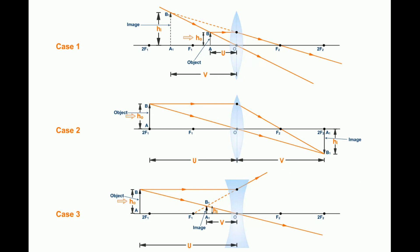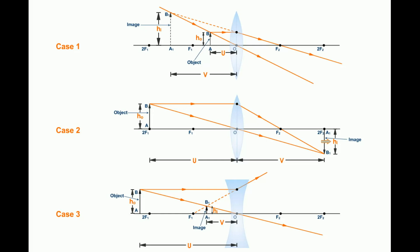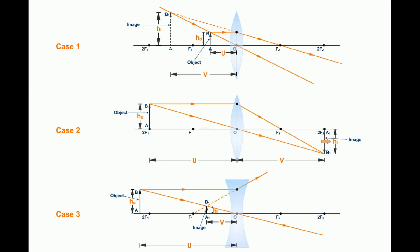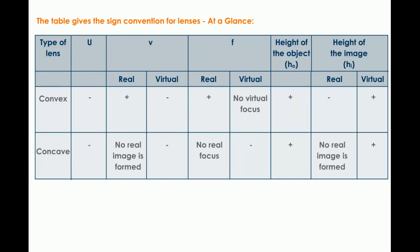Now, in cases 1 and 3, the image is also formed above the principal axis, so the height of the image is positive. And in case 2, the height of the image is negative because it is below the principal axis — distances measured below the principal axis are negative. Look at the table. You will simply understand all the sign conventions for convex and concave lenses.